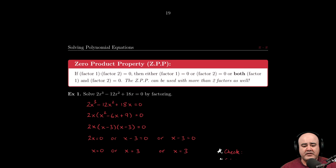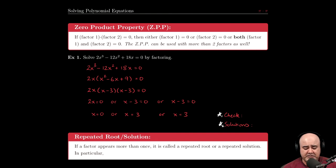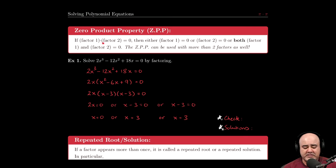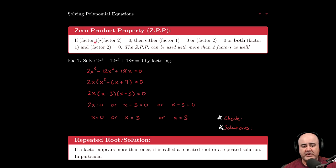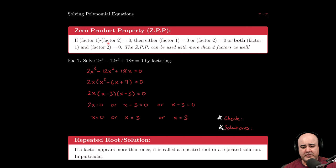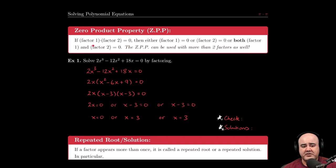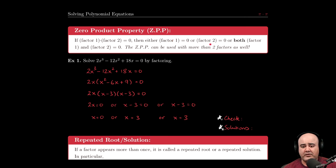The almighty ZPP needs to be understood very well. The zero product property states that if you have something being multiplied by something else - and I'm being vague here on purpose because this something doesn't have to always be a binomial, it could be a trinomial, monomial, or polynomial times another polynomial - if you have two factors being multiplied and the answer is zero, then either the first one has to be zero, or factor two has to equal zero, or both factor one and factor two have to be zero.